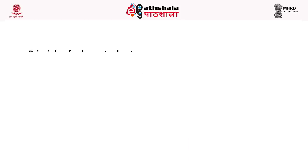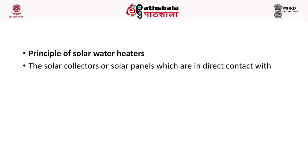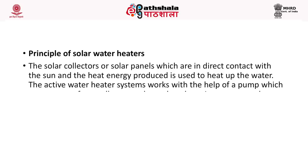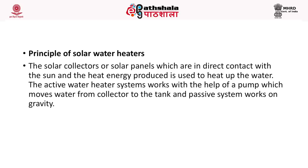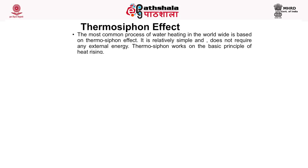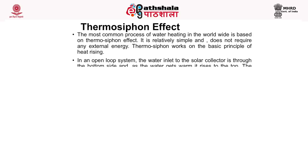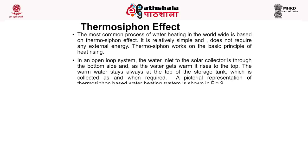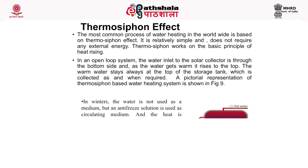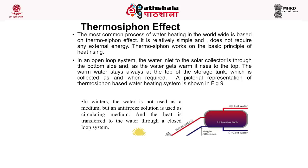The principle of the solar water heater: solar collectors in direct contact with the sun produce heat energy used to heat water. The active water heater system works with the help of a pump which moves water from the collector to the tank, while the passive system works on gravity. The most common process is based on the thermosyphon effect, which is relatively simple and does not require any external energy. Thermosyphon works on the basic principle of heat rising — water enters the solar collector from the bottom, and as it warms it rises to the top of the storage tank.